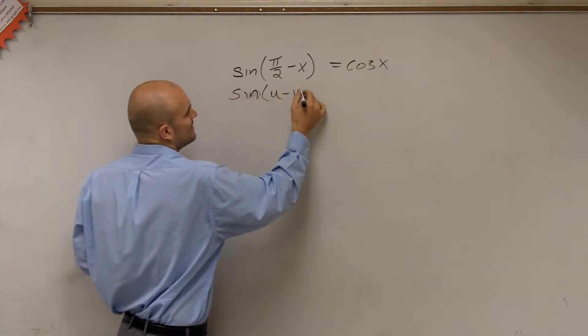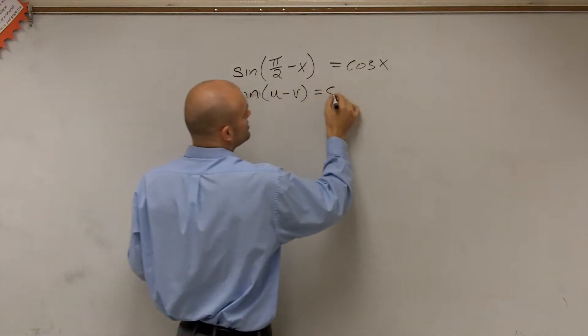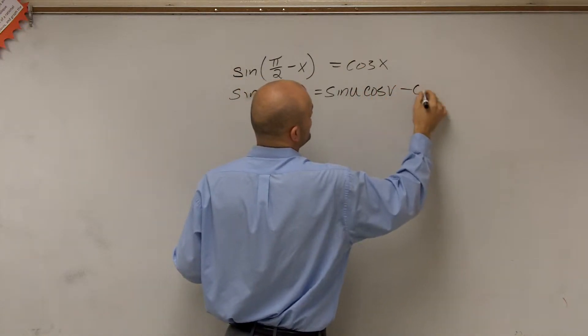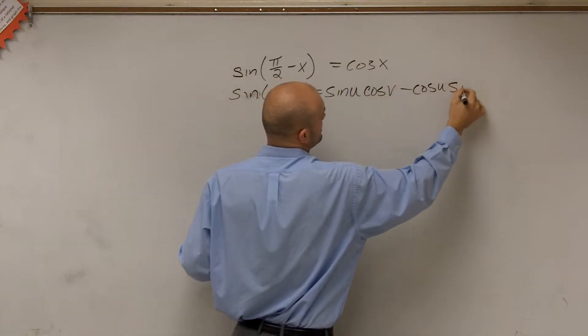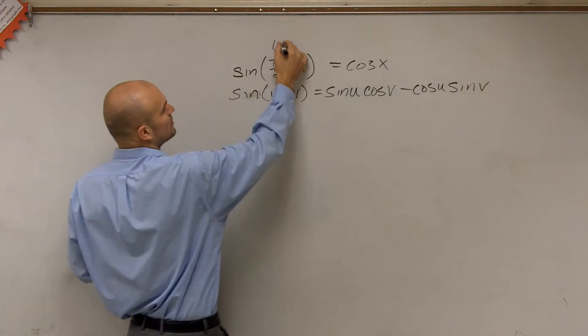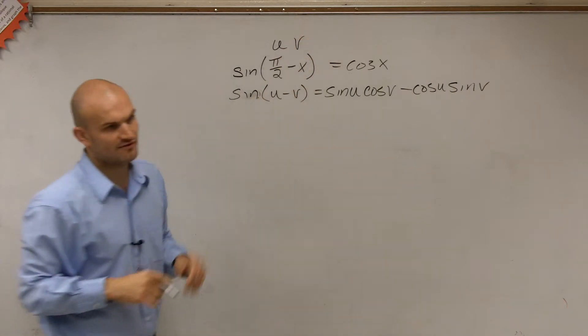Therefore, for u minus v, we know that this formula is going to be the sine of u times cosine of v minus the cosine of u times sine of v. All we need to do is label this as our u and this as our v.